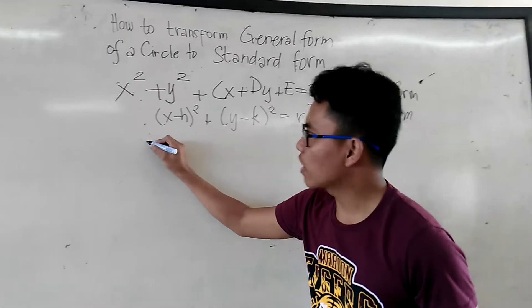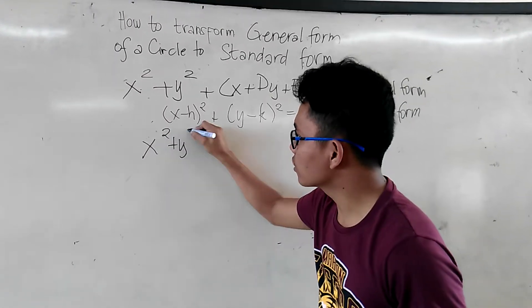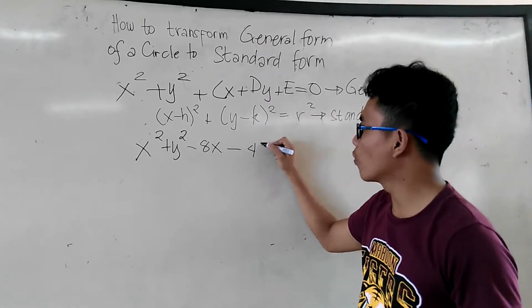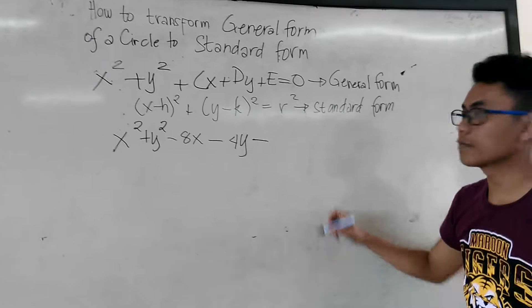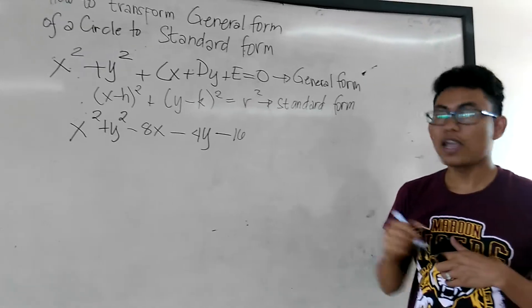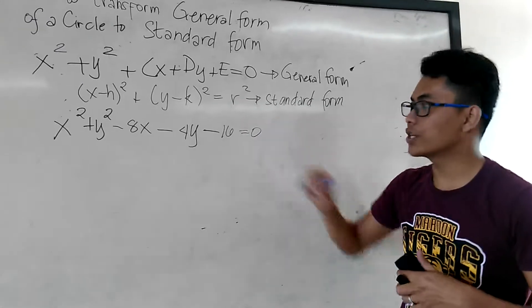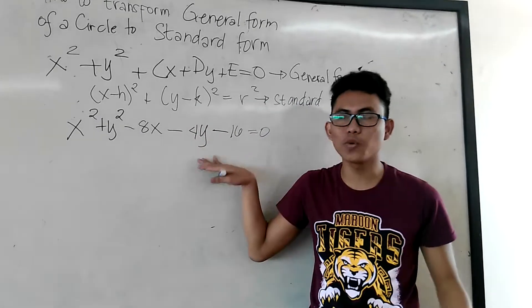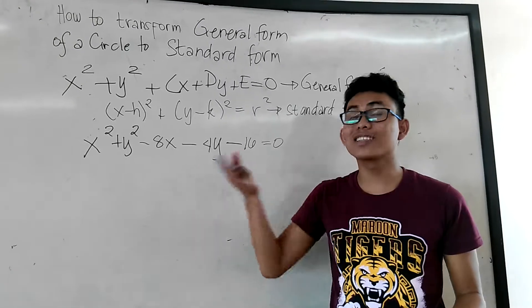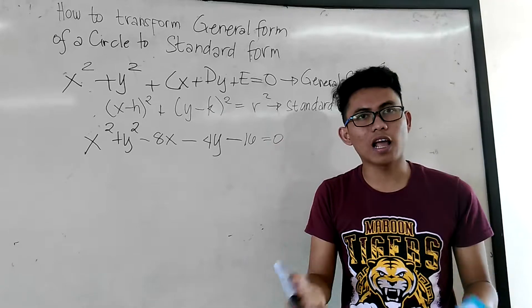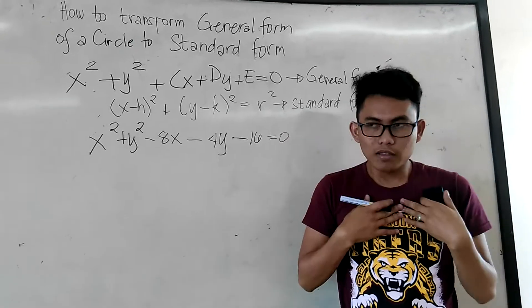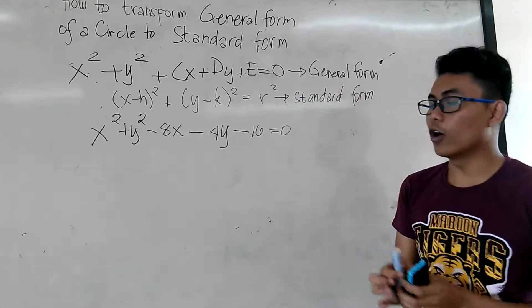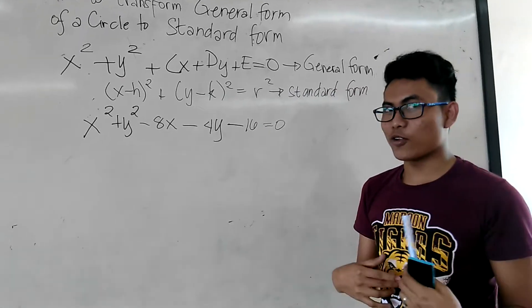So we have this example: x squared plus y squared minus 8x minus 4y minus 16, then is equal to zero. So, I know maraming ways on how to do this one, but I prefer to use this technique kasi I find it easier talaga. Mas madali po itong technique para sa akin and I hope na mas madali din sa inyo. So ngayon, please, eyes on me.